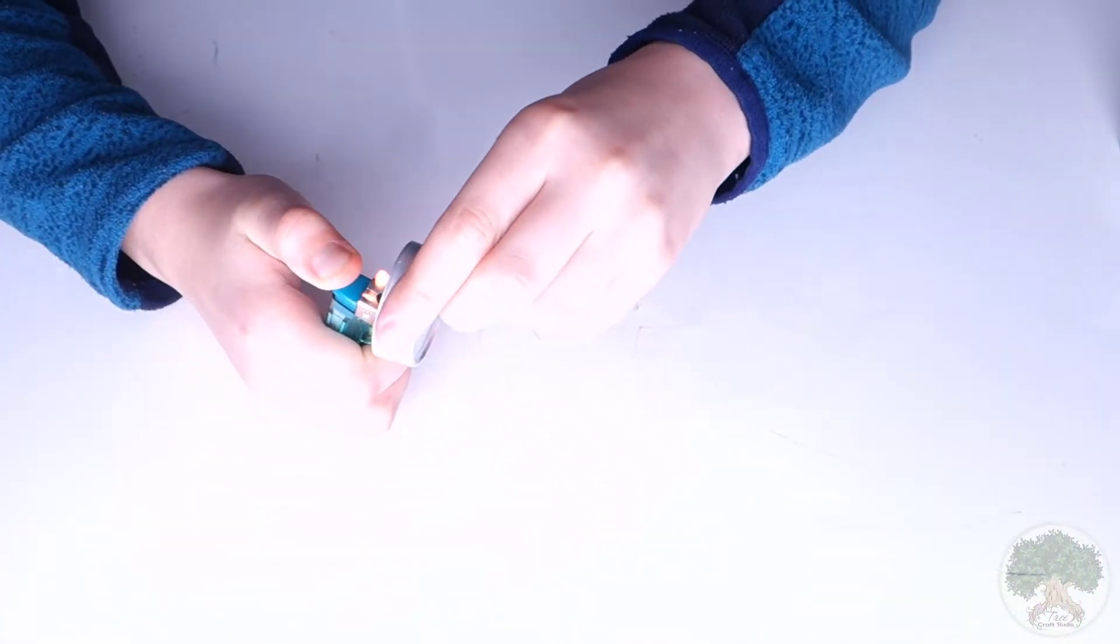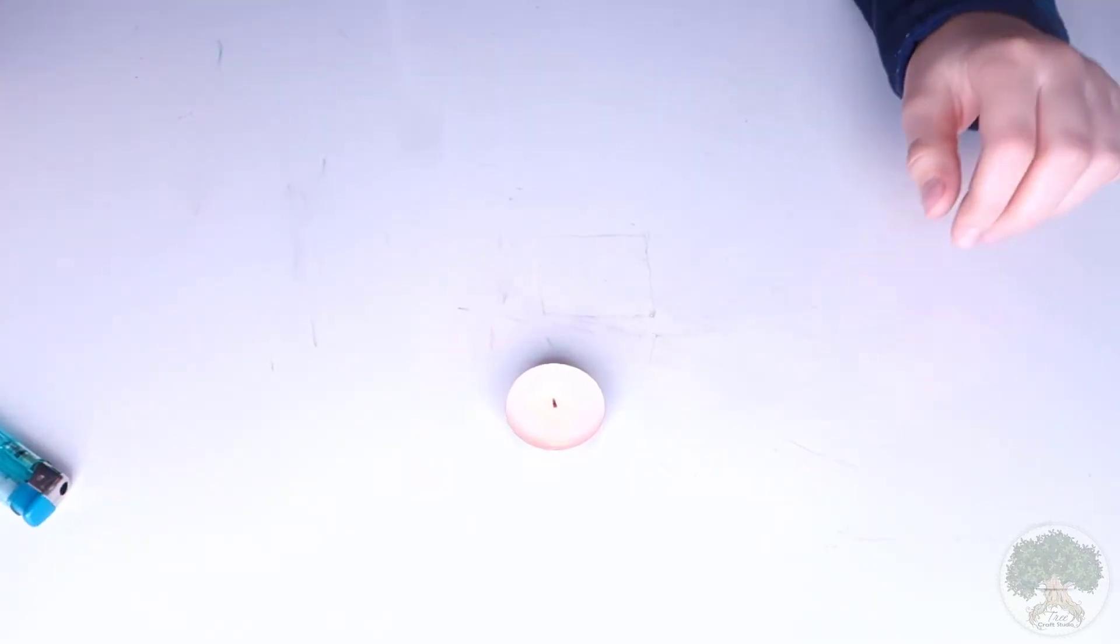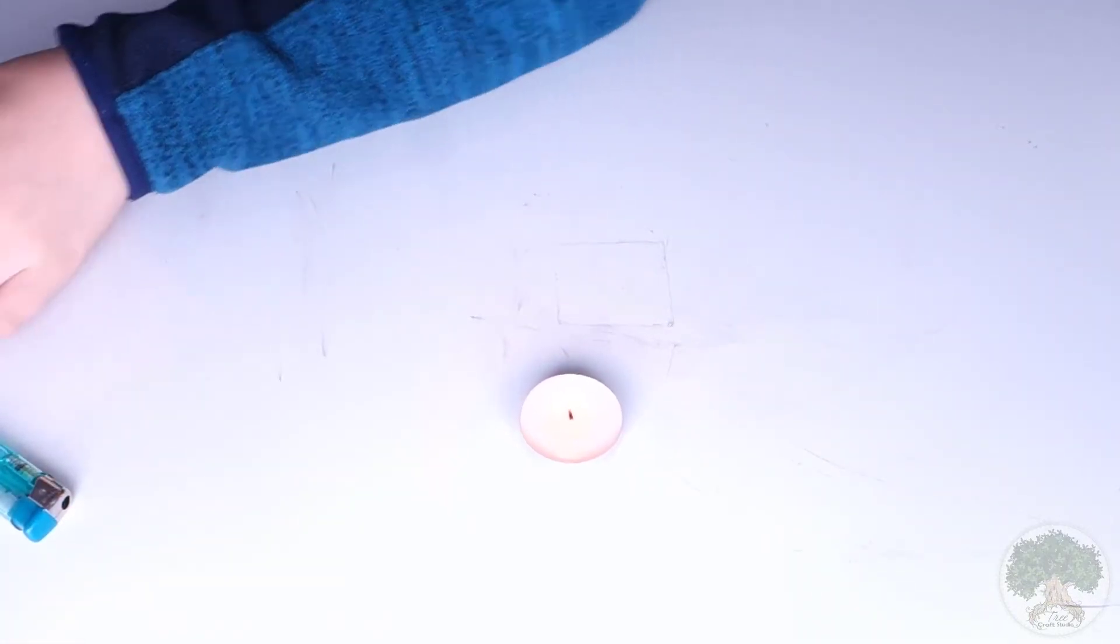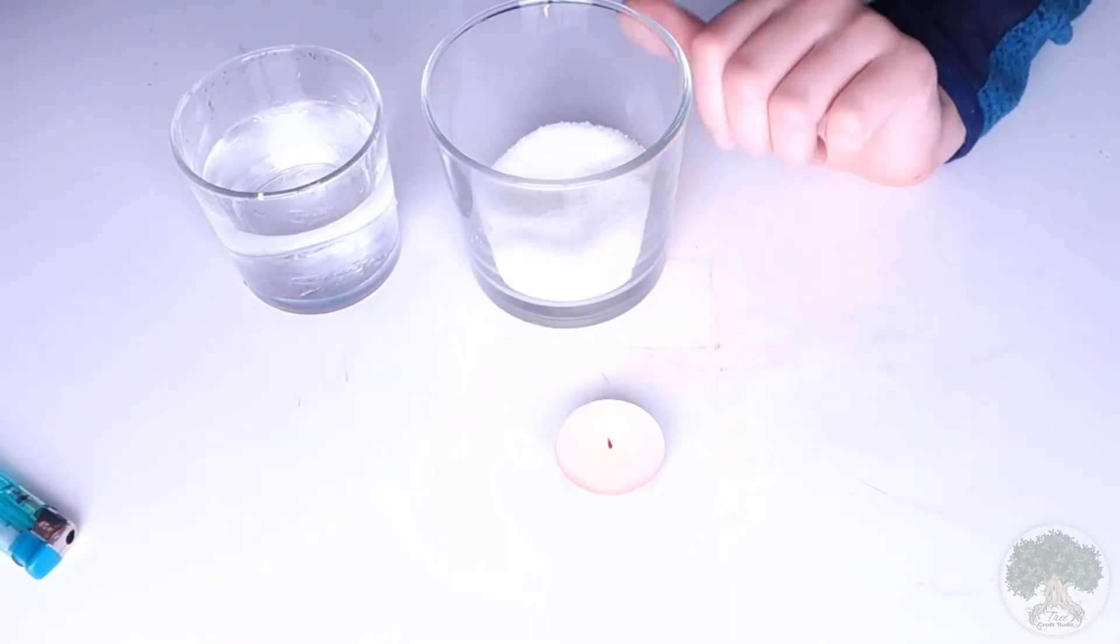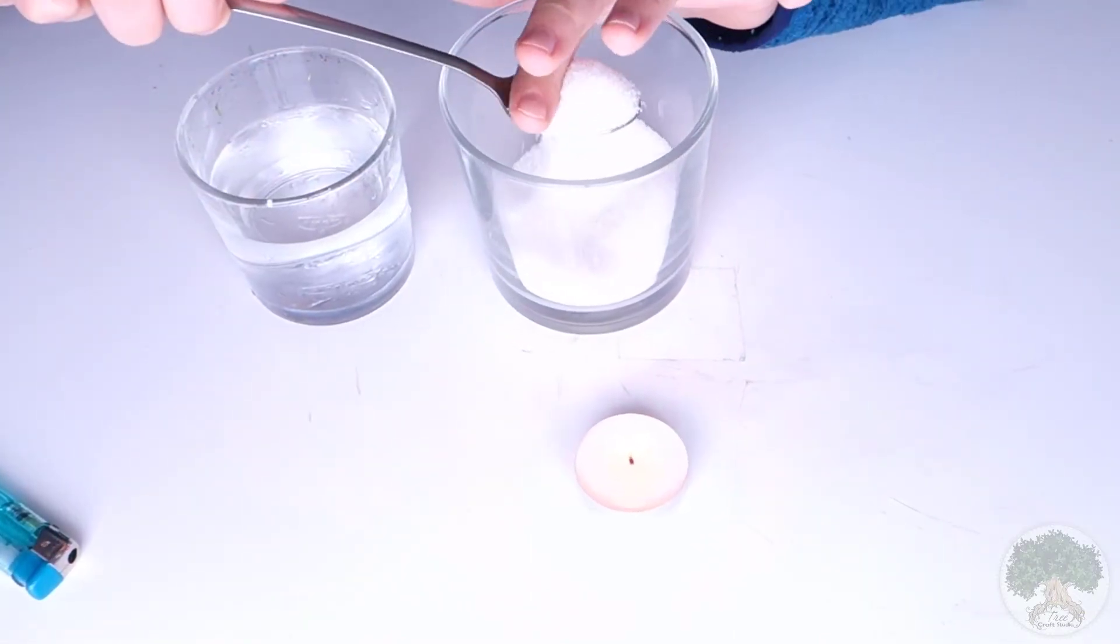Prepare the candle first and leave it on the side. We will use it in a minute. Then take sugar and put it on the spoon, just under the full width. And add a few drops of water so there is just enough to wet the sugar.